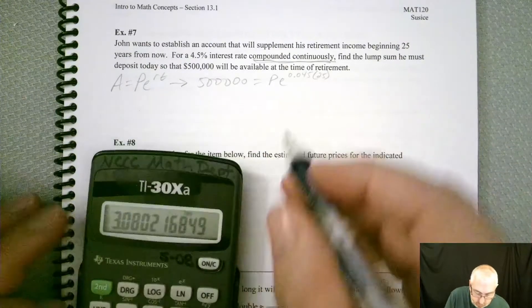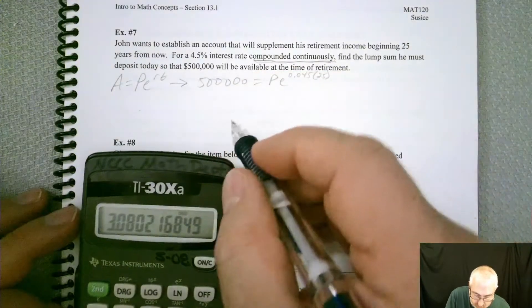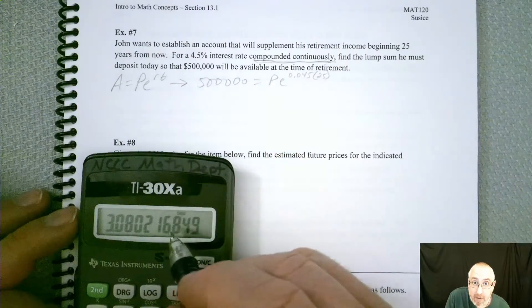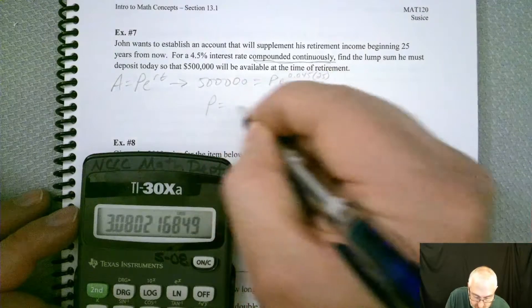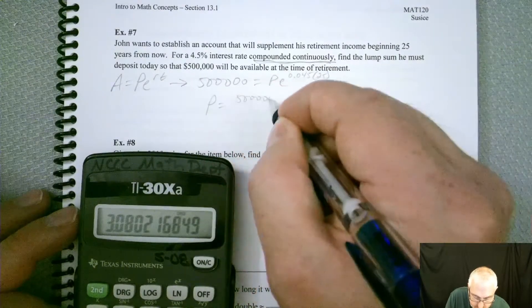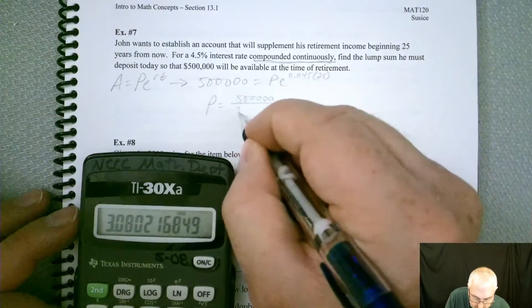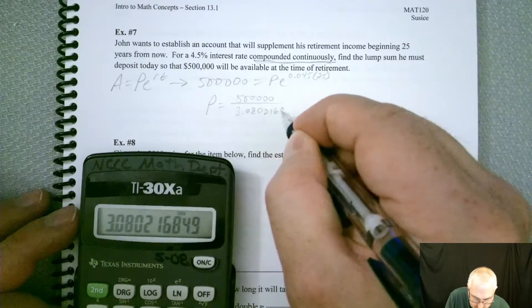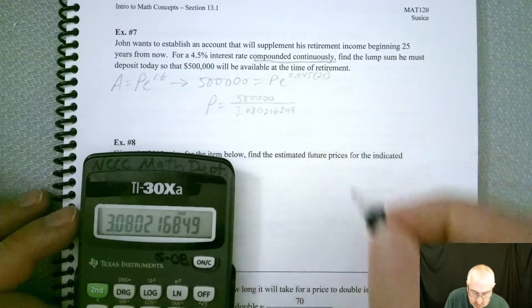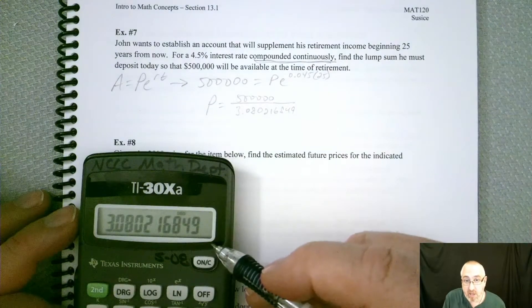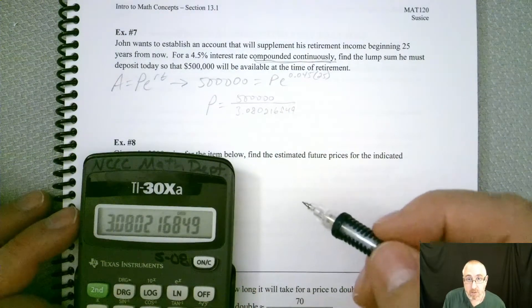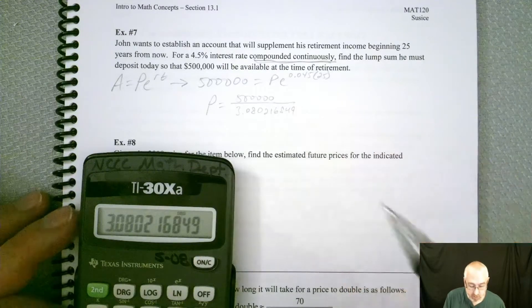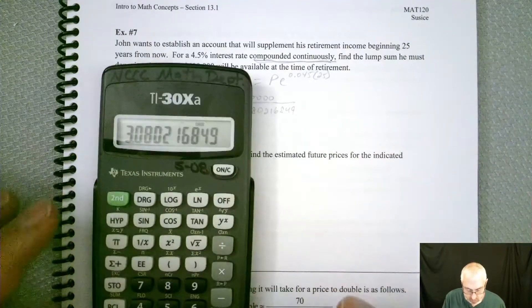So now we should know at this point that P, if we divide both sides by that number, that's going to get us P. So P should be equal to 500,000 divided by 3.080216849. And again, that's probably not even all of it. It's going to keep going and going and going. So that's just a rounded off number also, which isn't great, but we deal with what we got.